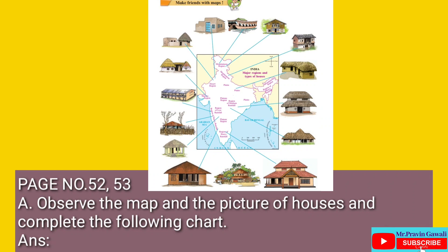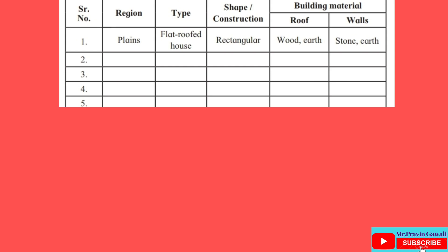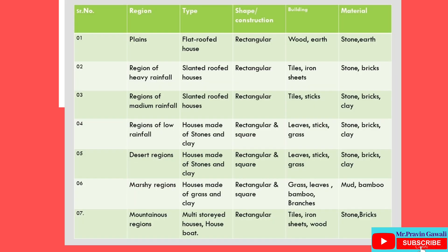Students, now we are going to study the questions on page numbers 52 and 53. Observe the map and the pictures of houses and complete the following chart. You need to observe the map given on page number 52. The chart requires you to write the region, type, shape or construction, and building material.